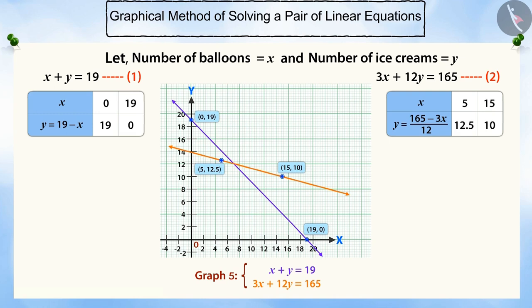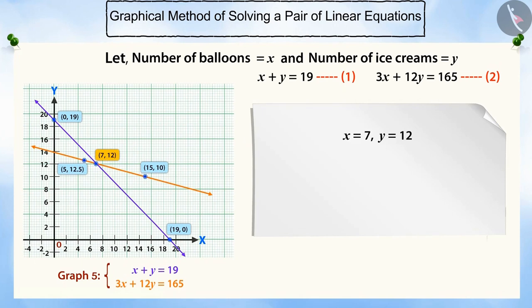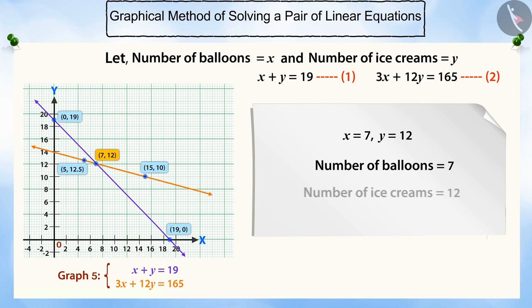Both these lines intersect at the point (7, 12), which is the only common point for both the lines. Therefore, x = 7 and y = 12 is a solution for this pair of equations. Since the point (7, 12) is a common point on both the lines, this is the only solution for the given pair of linear equations in two variables. Therefore, Rahul bought 7 balloons and 12 ice creams.